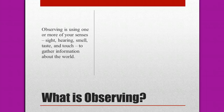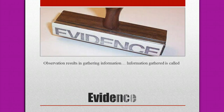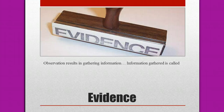Making and recording observations is the most basic skill in science. Observations result in gathering information. When we gather this information, it is called evidence.